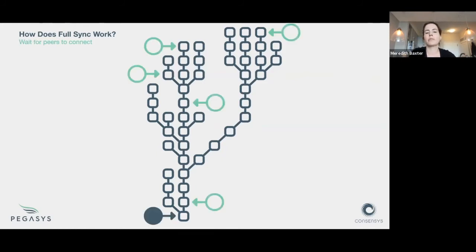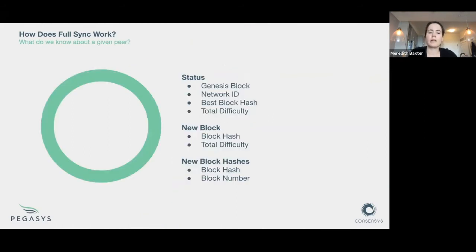The first step that the synchronizer takes is to wait for peers, because you can't do anything without peers. And what do we know about these peers? When they connect, they'll send us the status message, so that tells us what network they're running on and it also gives us information about their chain head, their best block hash, and total difficulty. And then as blocks propagate across the network, we can watch for those messages to see if peers are advancing, so we can kind of estimate where their chain is.